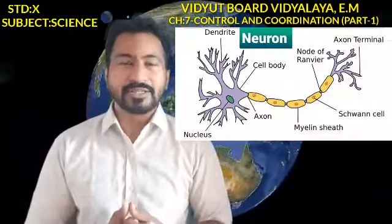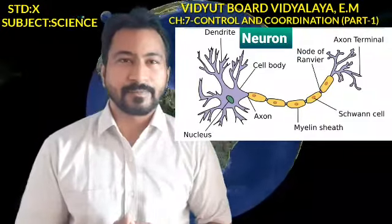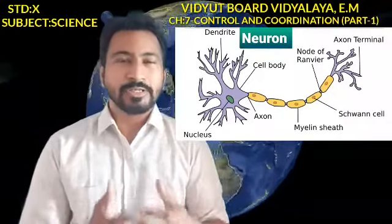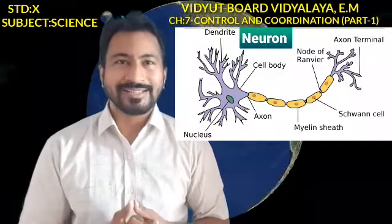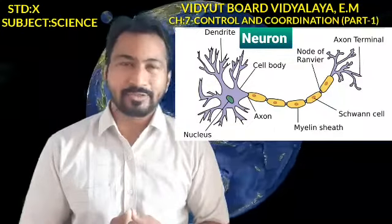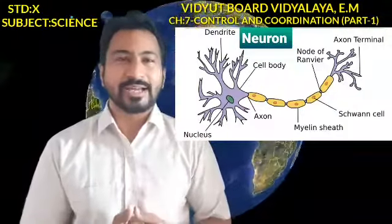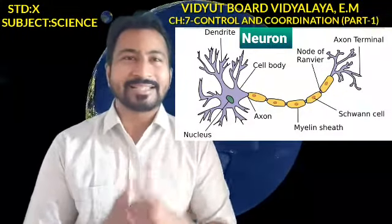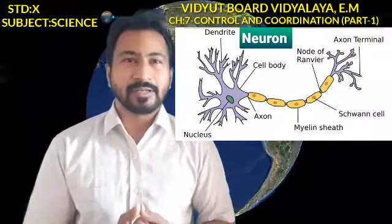Let us observe the typical structure of a neuron. This is the diagrammatic representation of a typical neuron. If you observe carefully, there are two major cell processes: the axon and the dendrons. The axon is a single one, while the dendrons or dendrites are many. The information from the dendrons is integrated and analyzed in the cytone, and then only one piece of information travels further.